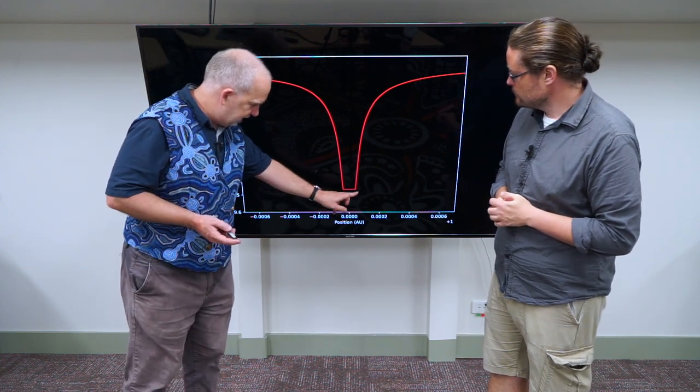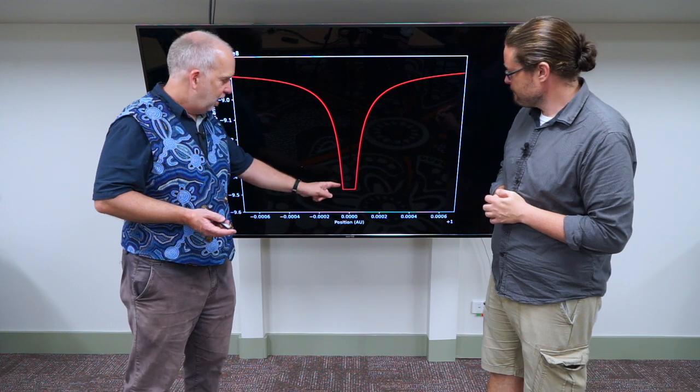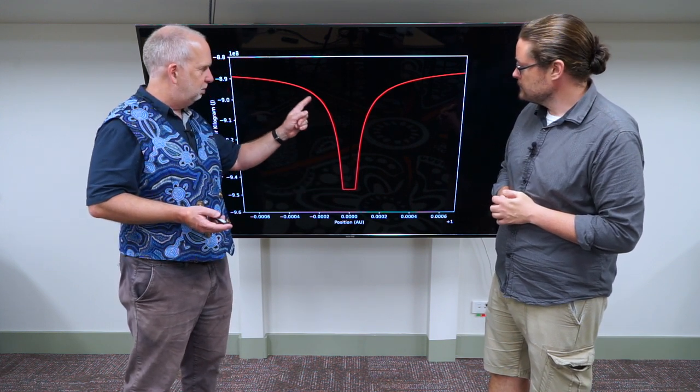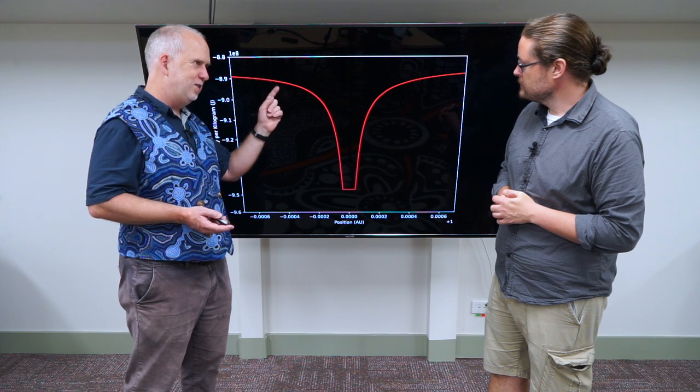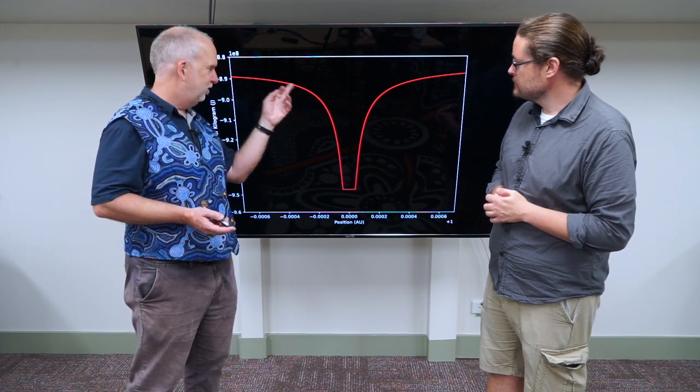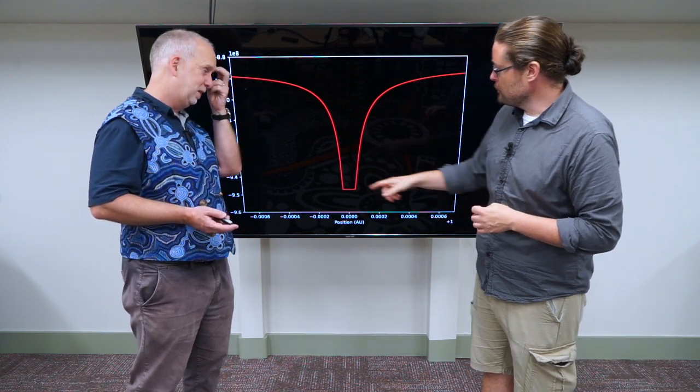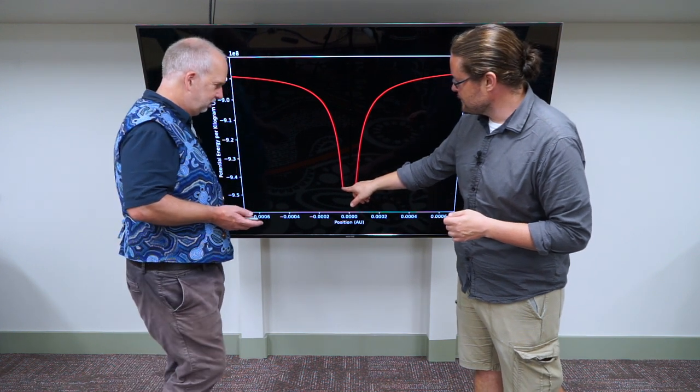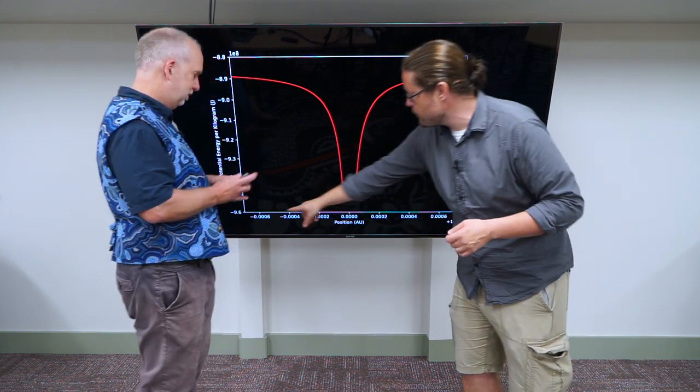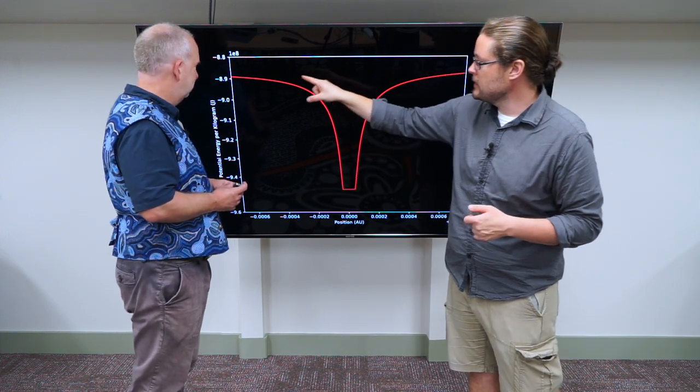So this down here is the Earth's surface, and you see that as you go up the energy goes out, but then when you get further and further away the gravity of the Earth is weaker and weaker, and so it tends to flatten out. So you need a lot really just to get you going, but as you get higher and higher, further away from the Earth, you need less.